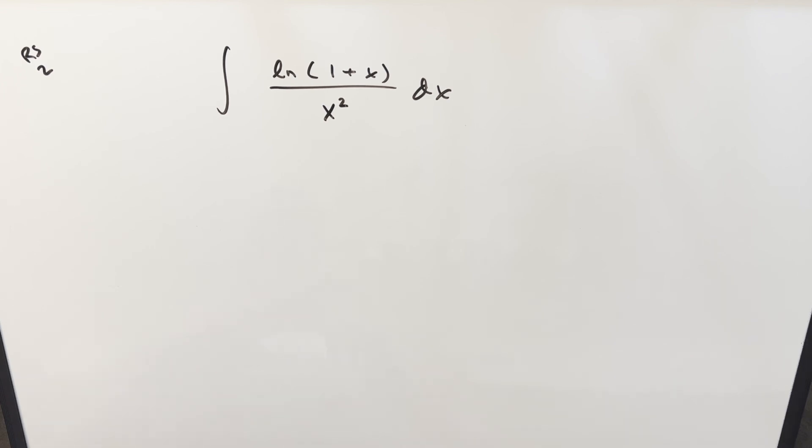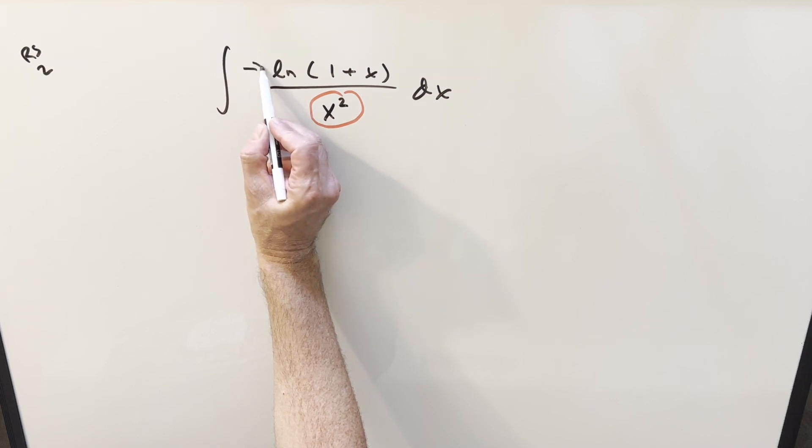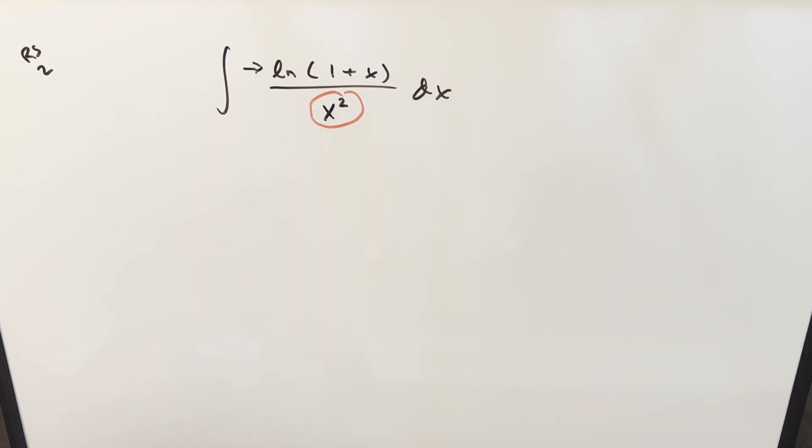At first I was wondering if we could somehow make use of the quotient rule just because we've got something squared in the denominator, but we only have one thing in the numerator, so I don't think that works that well here. So what I want to do is integration by parts, just because that's usually going to work well to differentiate natural log one plus x.